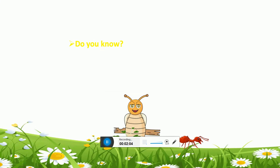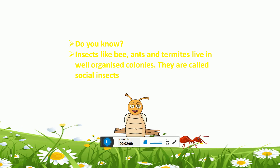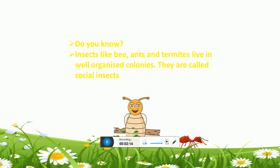Do you know? Insects like bees, ants, and termites live in well-organized colonies. They are called social insects.